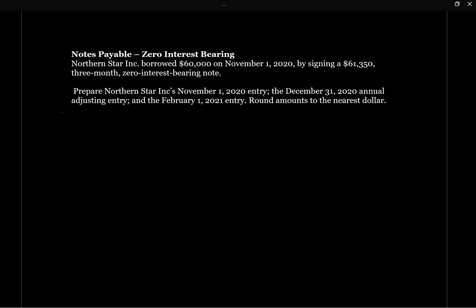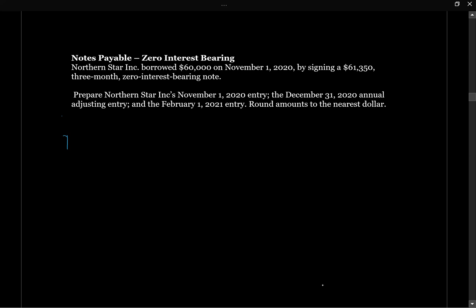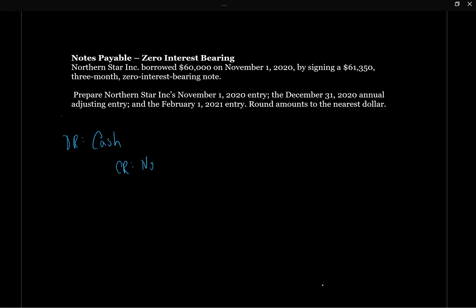For our November 1st entry, we know that we are going to receive the proceeds from the note payable. So we're going to receive cash, and we're going to need to set up a note payable on our statement of financial position, just like in the previous question. The amount that we received was $60,000, so that's what we're going to record here.